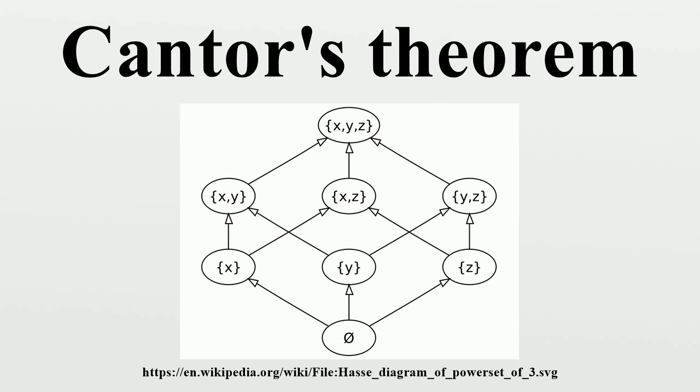So the assumption that an element of A maps to B must be false, and F cannot be onto. Because of the double occurrence of X in the expression X ∉ F(x), this is a diagonal argument.